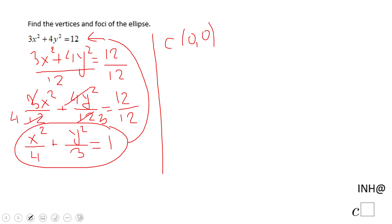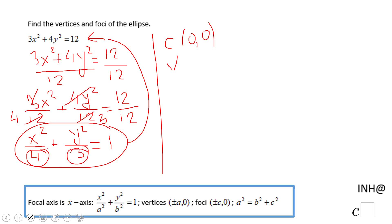And the vertices are, we're going to take a look and we notice this 4 and this is 3. That tells us the focal axis is the x-axis, so we're going to take the square root of that 4.